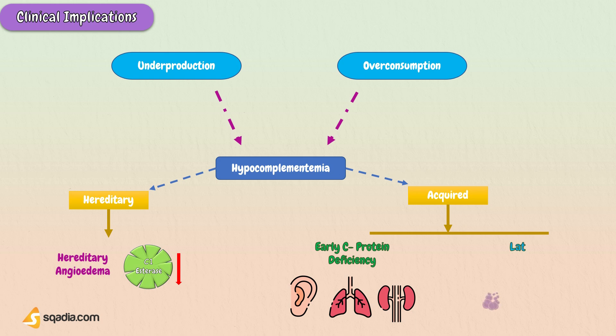In case of late complement deficiency, that is C5 to C8, incidence of Neisseria infection increases such as gonorrhea and meningitis. The deficiency of C9 does not manifest as pathology, even though it is a part of the membrane attack complex.